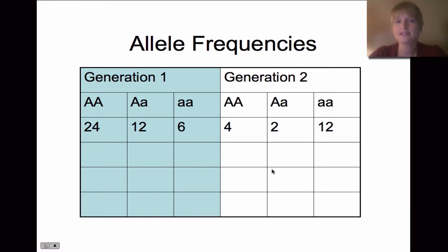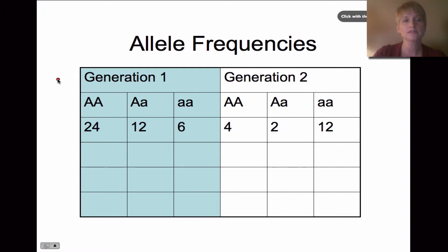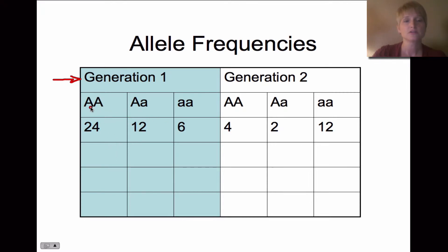So how do we know that evolution has occurred? We look at allele frequencies. There's some math involved, so let's break it down and see how we would know there was a change — an evolution — from generation one to generation two by looking at allele frequencies.